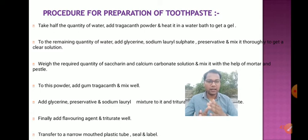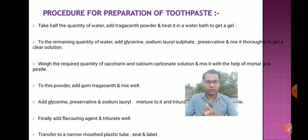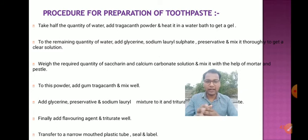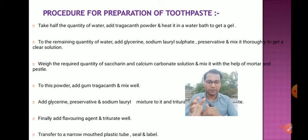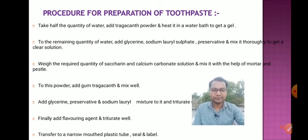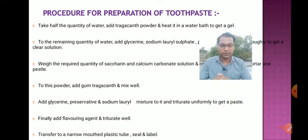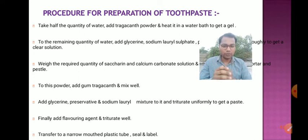For the preparation procedure: take half the quantity of water, add tragacanth powder, and heat it in a water bath to get a gel. To the remaining quantity of water, add glycerine, sodium lauryl sulfate, and preservatives, and mix thoroughly to get a clear solution. Weigh the required quantities of saccharine and calcium carbonate and mix using mortar and pestle. Add gum tragacanth and mix well, then add the glycerine-preservative-sodium lauryl sulfate mixture and triturate uniformly to get a paste.